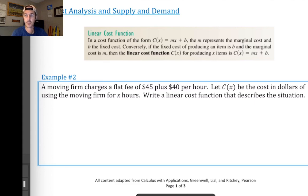And the example says that we have a moving firm charging a flat fee of $45 plus $40 per hour. A moving firm or a moving company, I suppose. So, c of x is going to be the cost in dollars. Of using the moving firm for x hours. So, x is being measured in hours. And we want to write this linear cost function that describes the situation. This is pretty straightforward.